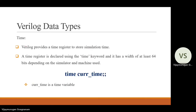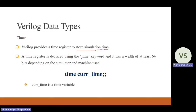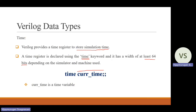The next data type is time. Verilog provides a time register to store simulation time. This data type is mainly used to store the simulation time. A time register is declared using the time keyword, and it has at least 64 bits depending on the simulator used. For example: time current_time — where current_time is the variable name.